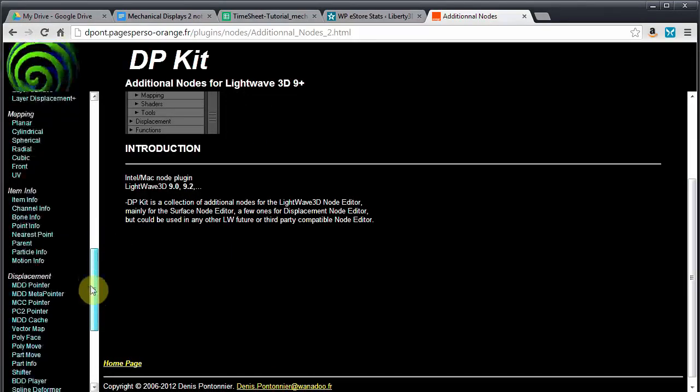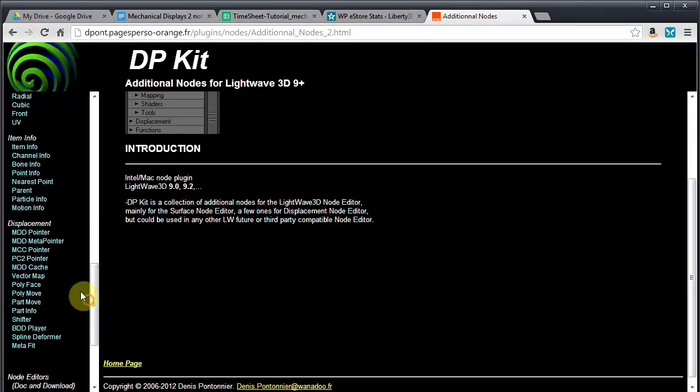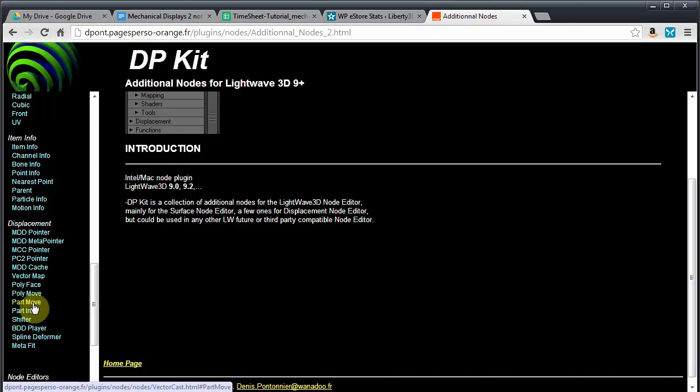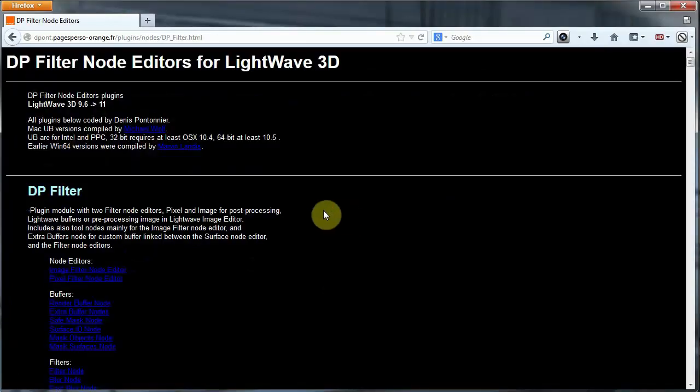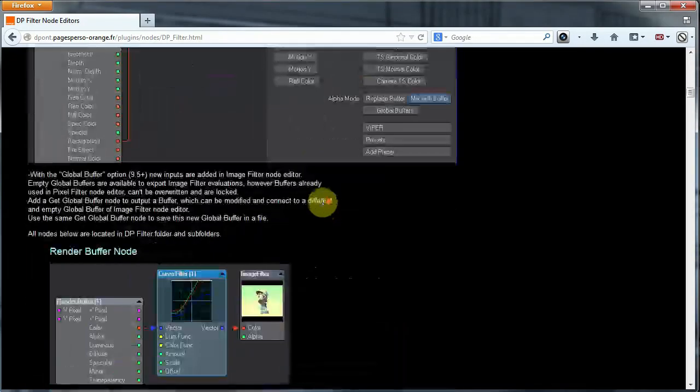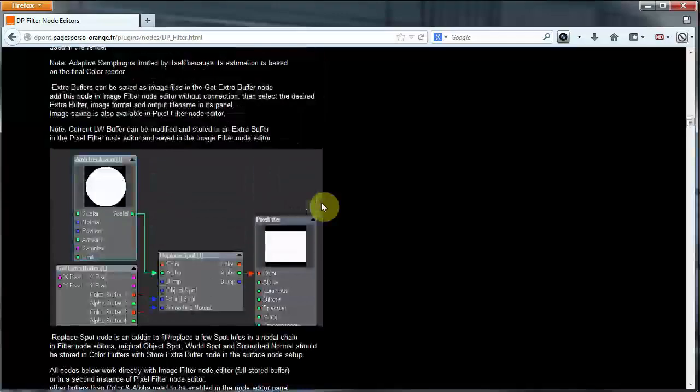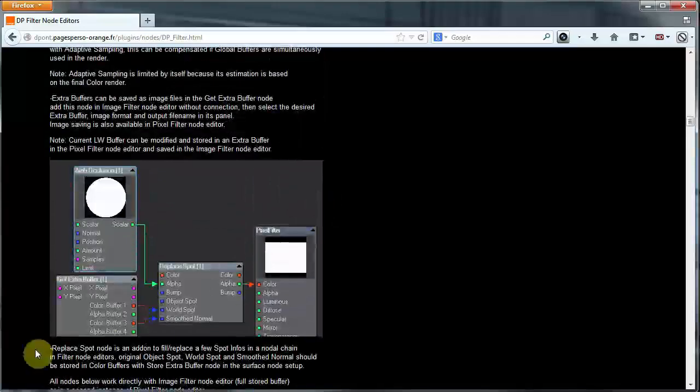DP Kit is a collection of tools for various purposes. There are several nodes for surfacing and for moving items around. DP Filter is primarily a set of tools for post-processing your renderer. We will be using the nodes in ways they may not have originally been intended to be used.